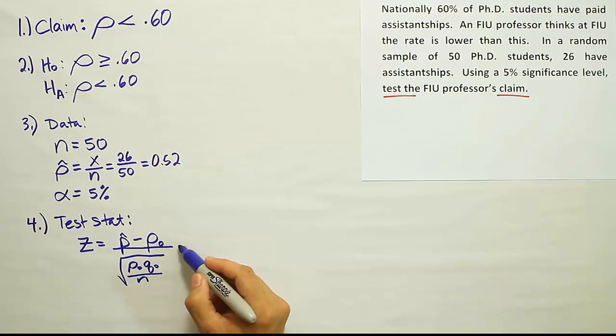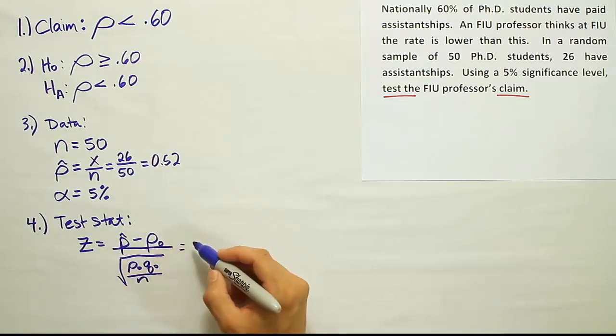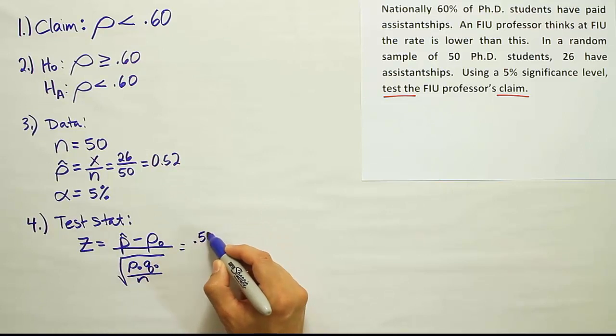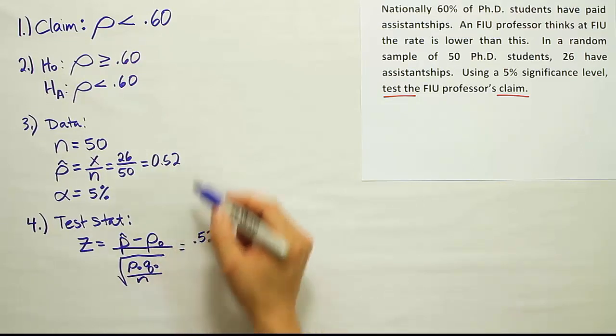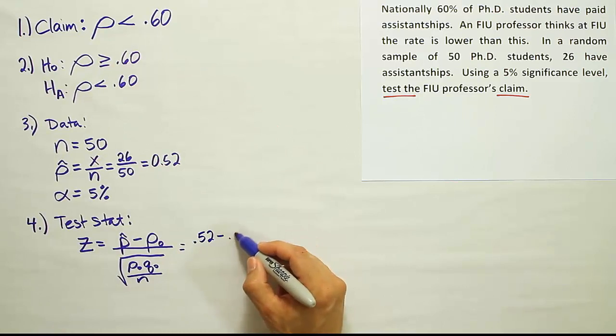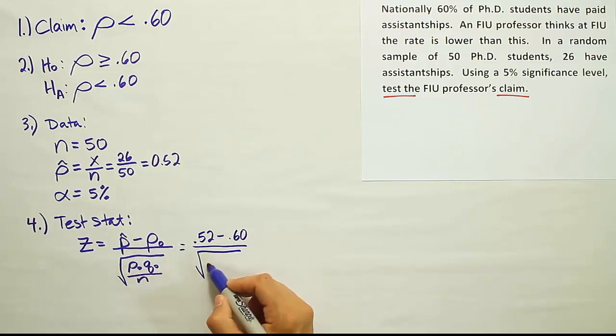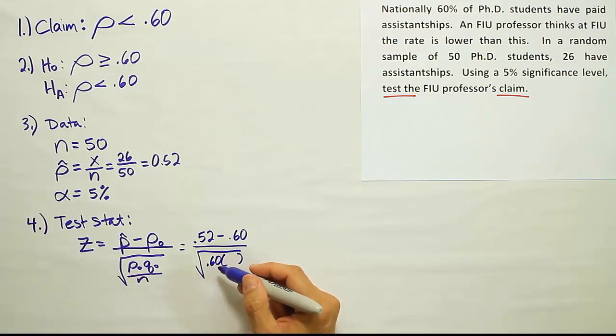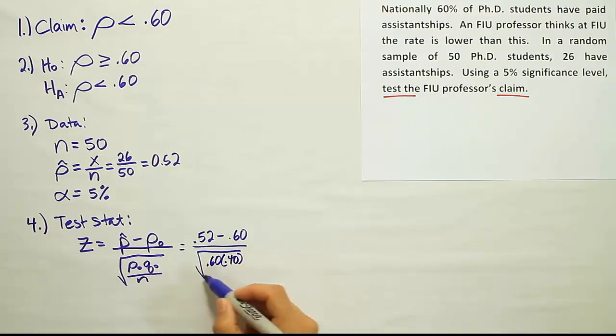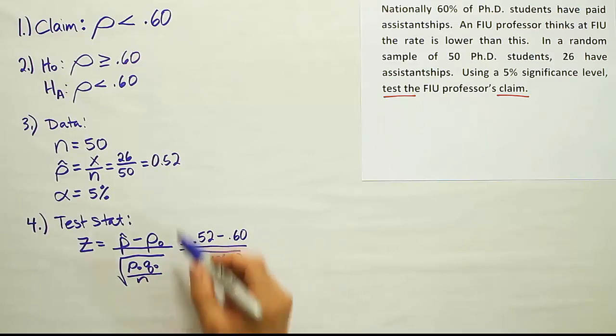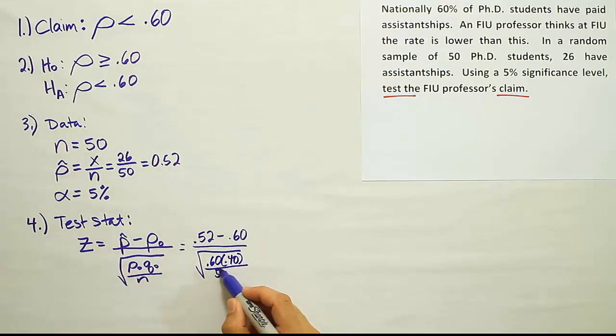So let's fill in this information that we have. The P hat is 0.52 minus rho naught, which is essentially the number from H0, which is 0.60, and divide that by the square root of the same number we had here, 0.60, times its complement. So if you take from 100%, 60%, you get 40%, so the complement is 0.40, and then divide by N. N is 50 in this problem.